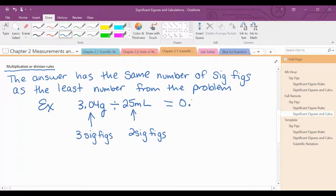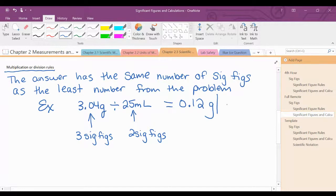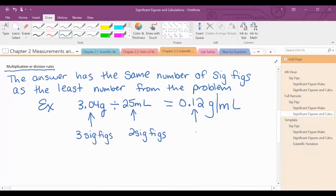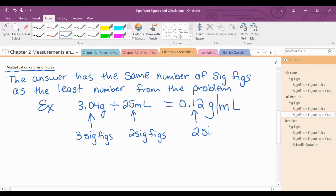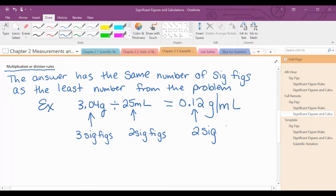So I'm going to get 0.12, and then the units, and we'll talk about units in just a minute, are grams per milliliter. This is 2 sig figs. Because remember, leading zeros are not significant.